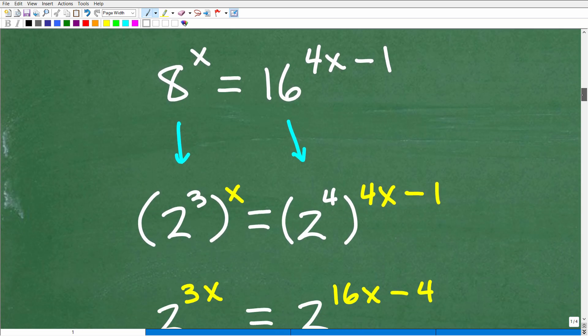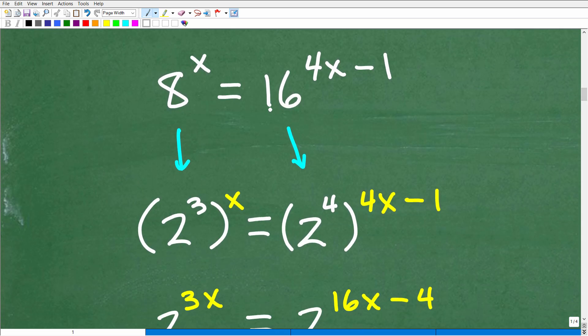Now, so we're going to rewrite this equation, 8 to the x is equal to 16 to the 4x minus 1. Instead of an 8 and a 16, for 8 we're going to put in a 2 cubed, and for 16 we're going to put in 2 to the fourth. So this new equivalent equation is 2 cubed to the x power, which is the same thing as 8 to the x, is equal to 2 to the fourth, which is the same thing as 16 to the 4x minus 1 power.